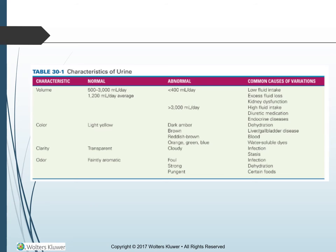Characteristics of urine — Table 30-1. Volume: normal is 500 to 3,000 milliliters per day, averaging 1,200 milliliters per day. Abnormal is less than 400 milliliters per day. Common causes are low fluid intake, excess fluid loss, and kidney dysfunction. Greater than 3,000 milliliters per day is also abnormal; causes include high fluid intake, diuretic medications, endocrine diseases, and dehydration. Color: light yellow is normal. Dark amber indicates dehydration. Brown indicates liver or gallbladder disease. Reddish brown indicates blood. Orange, green, or blue means water-soluble dyes are present in the urine.